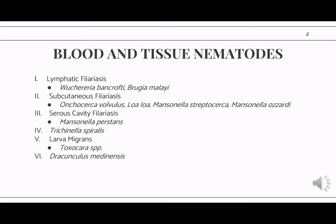We have the serous cavity filarial worms, that would be Mansonella perstans. Next, we have Trichinella spiralis, which is a nematode that inhabits the skeletal and cardiac muscles of humans. Then we have the Toxocara genus, which causes visceral larva migrans. Lastly, we have Dracunculus medinensis, but that will be tackled more in your lecture classes.